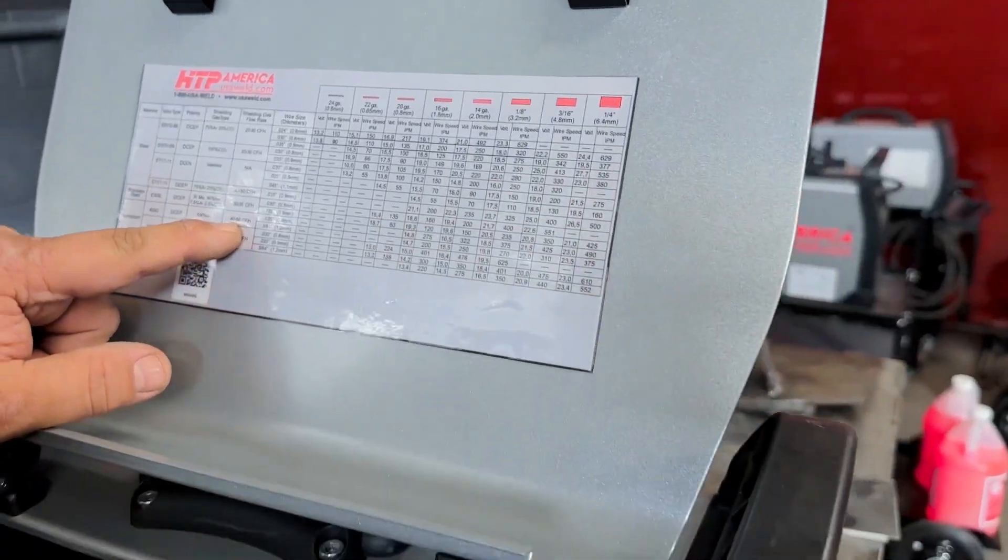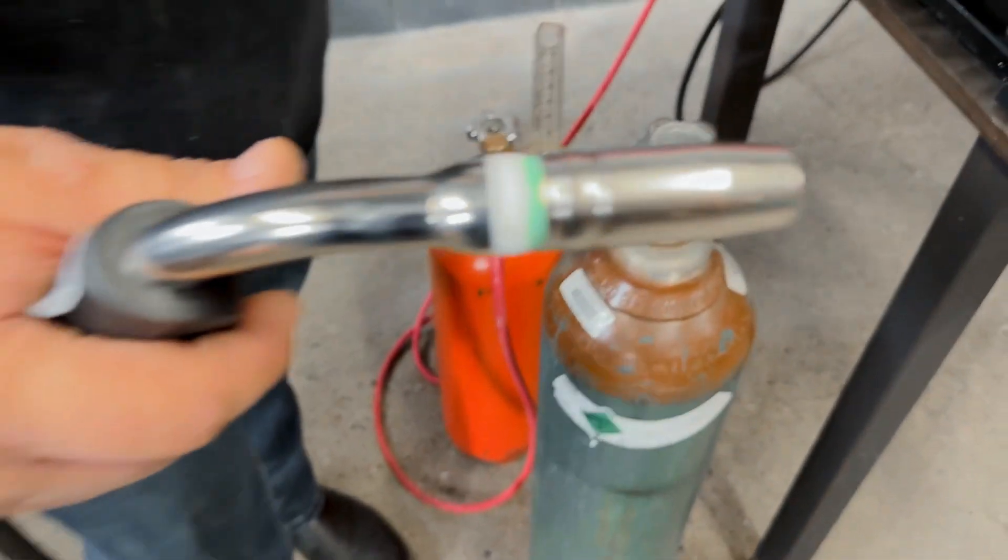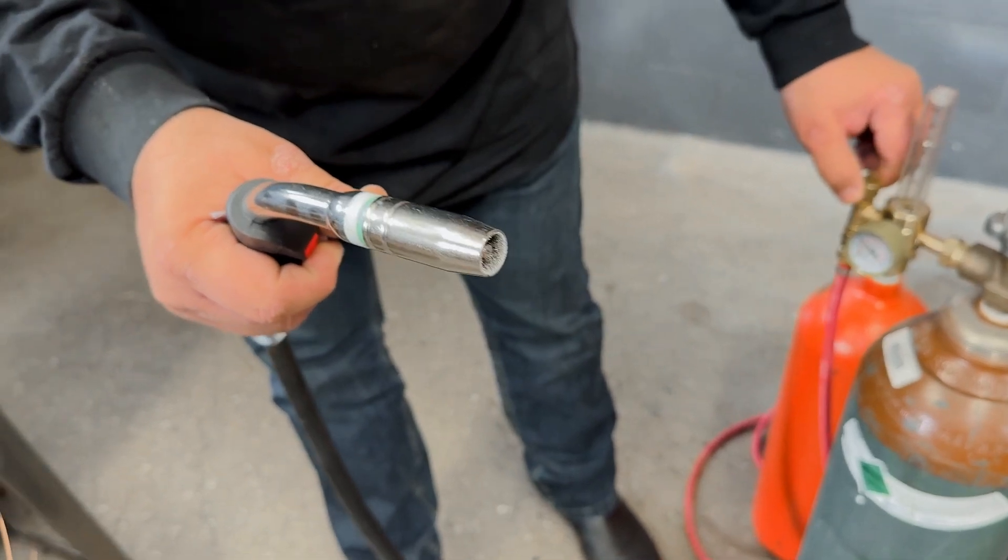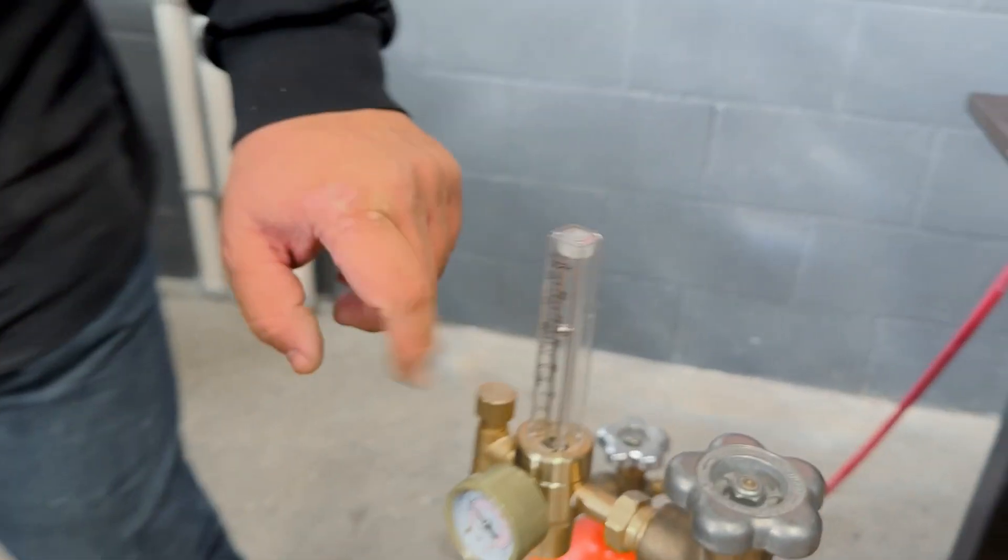So let's pull the trigger, purge the 7525 out, and make sure we have 40 to 50 CFH on the flow rate, bottom of the ball.